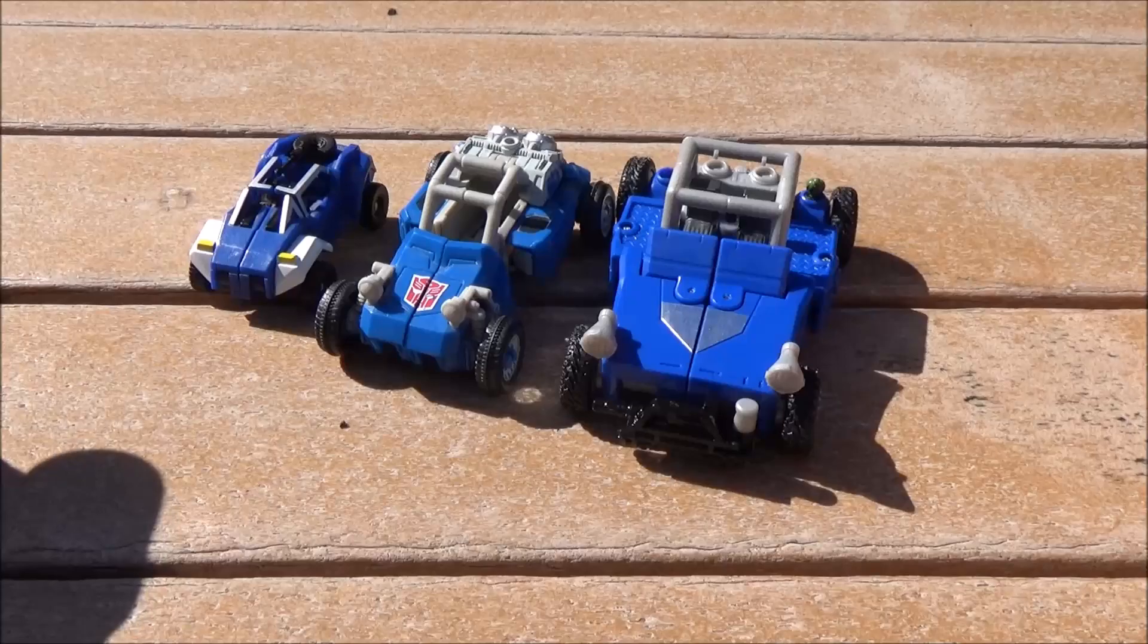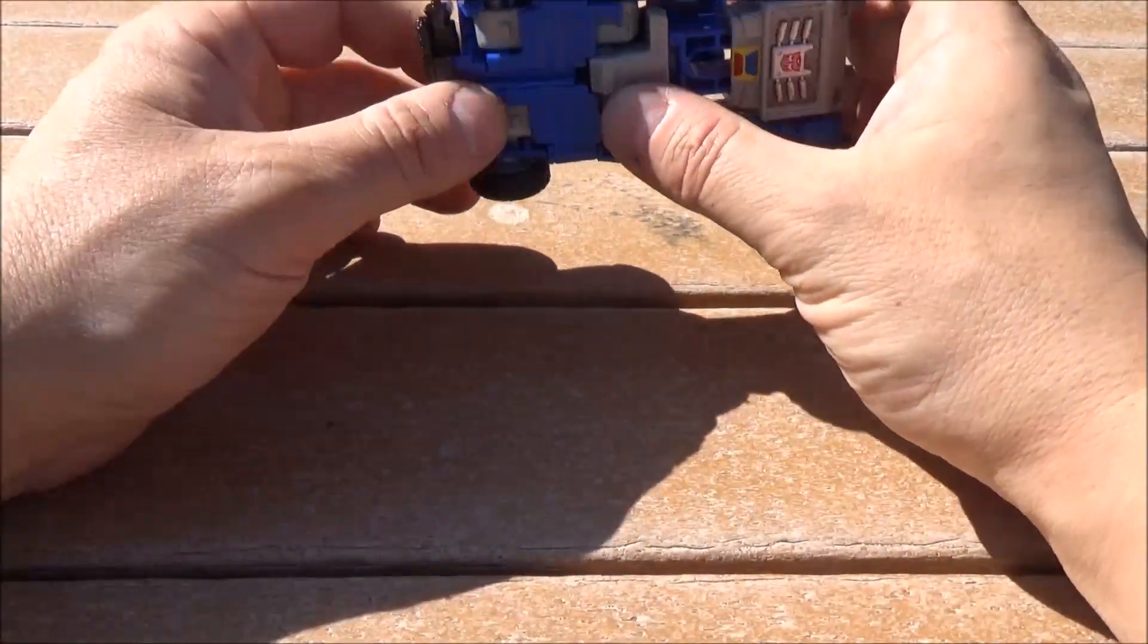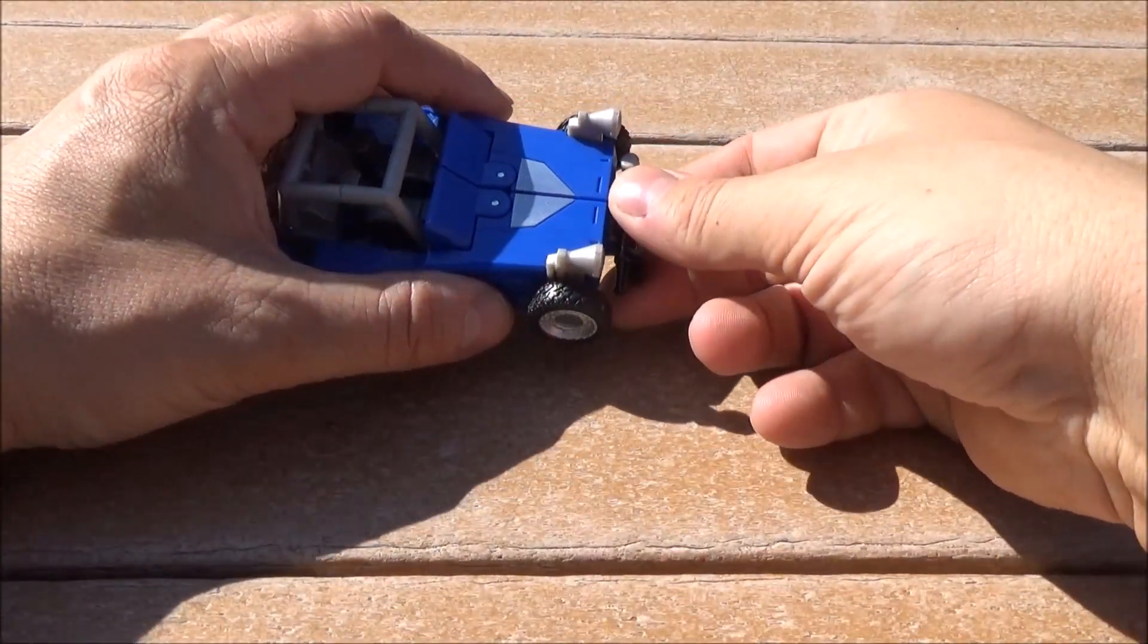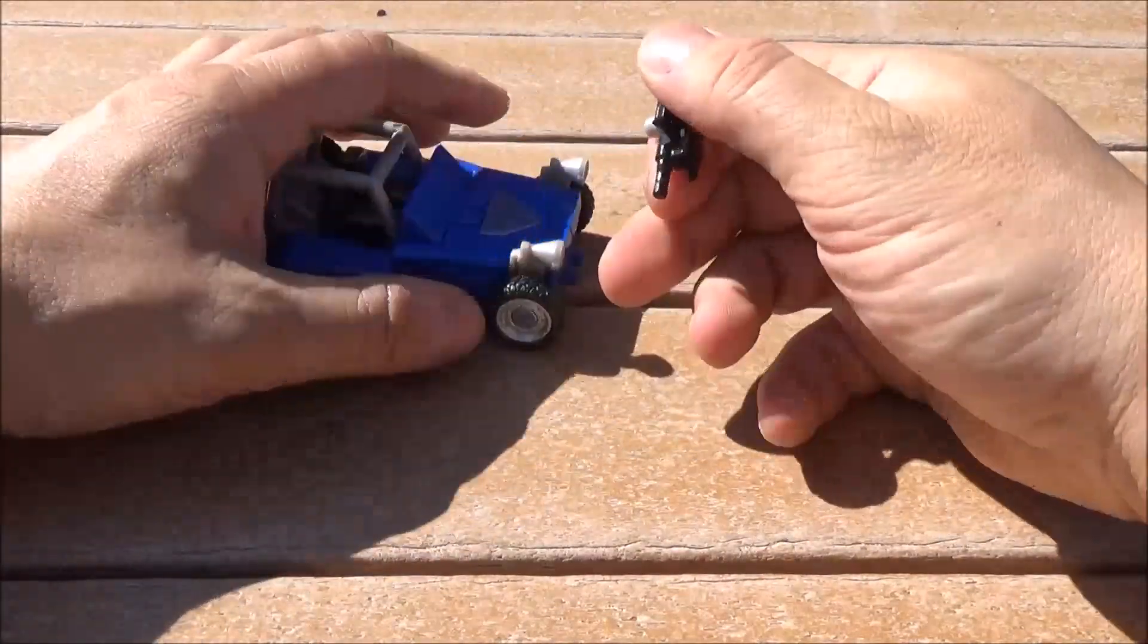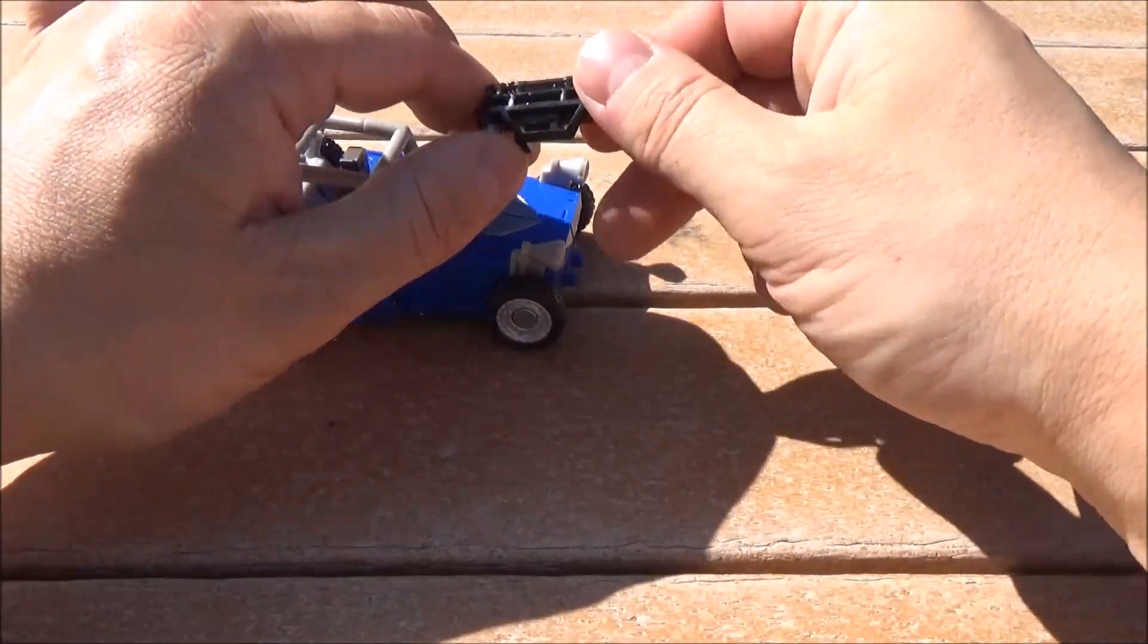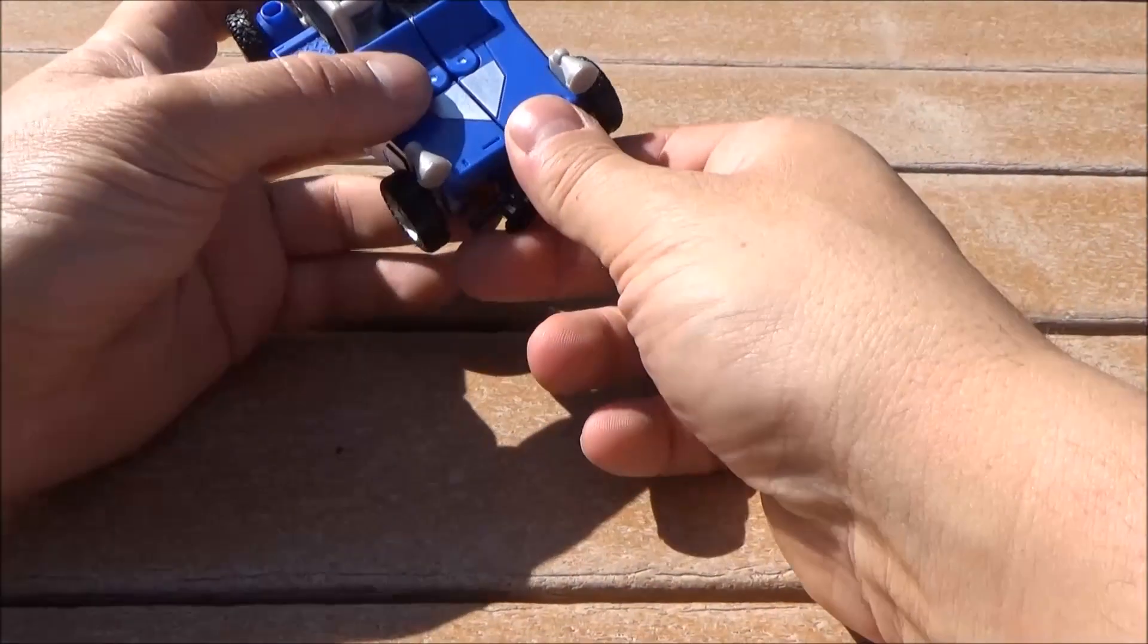No, I don't have a G1, that's on me. One other thing that is pretty impressive about this deluxe version of Beachcomber is that he actually has a weapon you can use. It's actually his front bumper here. You detach this, and there you go. That's pretty much it, if that excites you.